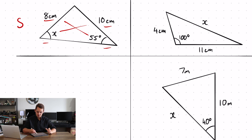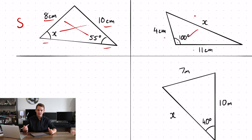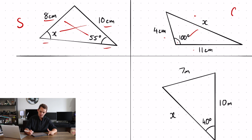Second question, top right. We've got three sides and the angle opposite the unknown side, which means you're using the cosine rule.